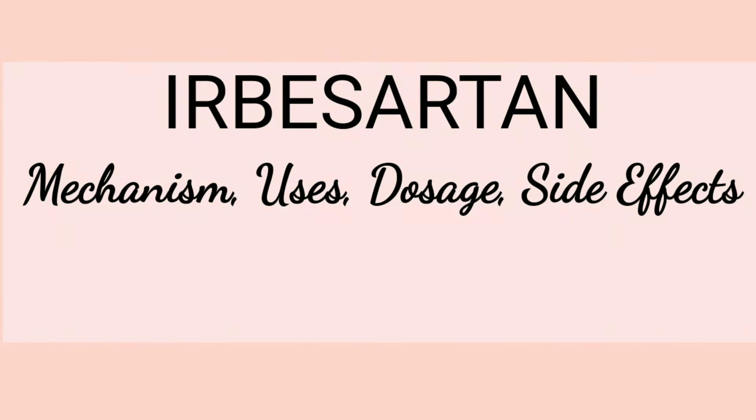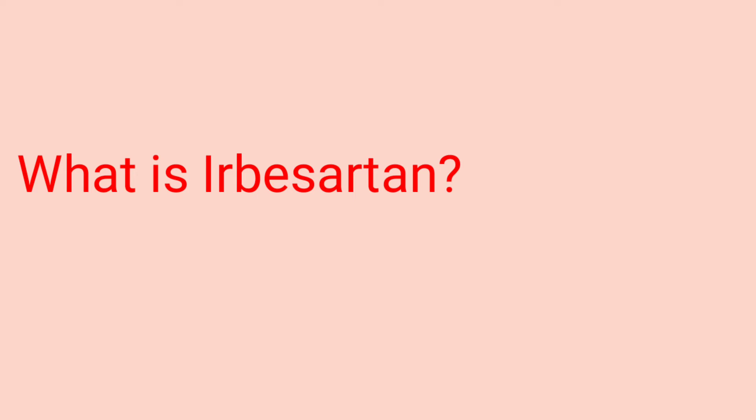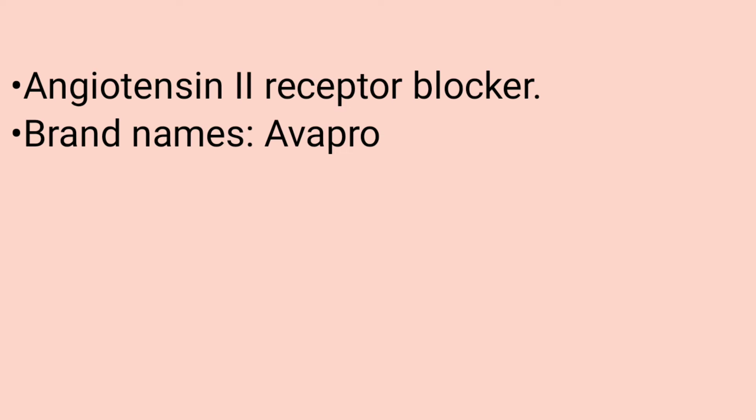Hi everyone, welcome back. We're going to look at Irbesartan — its mechanism, uses, dosage, and side effects. So what is Irbesartan? It is an angiotensin 2 receptor blocker, available under the brand names of Avapro, among many other brand names.